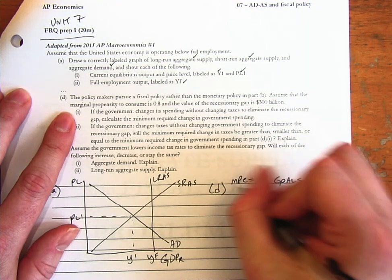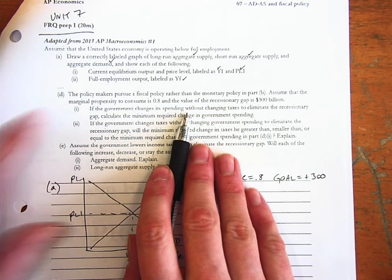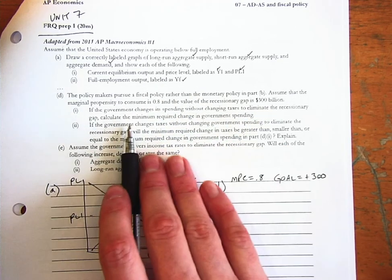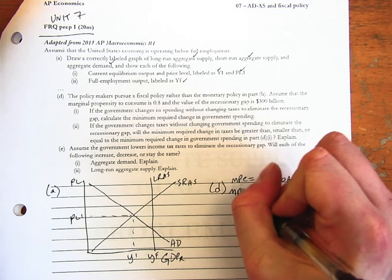So now we have to transform MPC into a multiplier, and it says if the government changes its spending without changing taxes, how much should they have to spend? So that's what we're going to need is a multiplier. So MPS, first step.